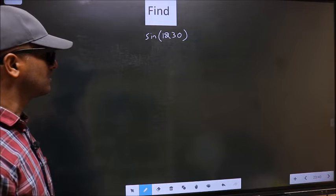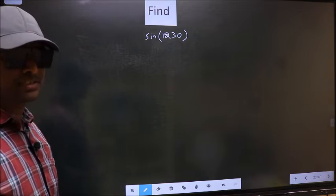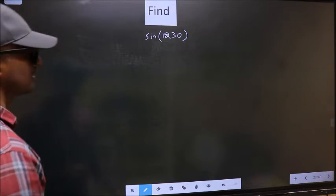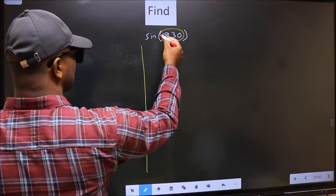Find sin(1230°). To find this, we should follow this method. See, here we have 1230.